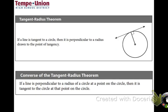These two theorems say: first, if a line is tangent to the circle, then it is perpendicular to the radius. The converse is also true — remember, the converse switches the 'if' and 'then.' So if a line is perpendicular to the radius of the circle, then it is tangent to the circle, touching it at just one point. That's a way to prove a tangent is occurring.